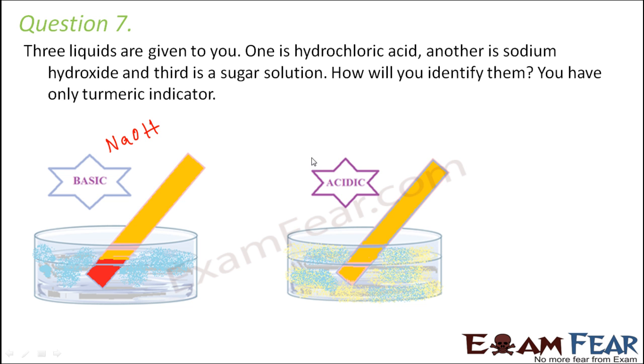It remains yellow in the acidic solution which is the hydrochloric acid and in case of sugar solution again there is no change in color. But in sugar solution if you take out this strip which was put in the sodium hydroxide solution so it will still remain the same but if you put the same strip in hydrochloric acid solution it will again become yellow. So that's how you can determine which one is hydrochloric acid and which one is sugar solution.